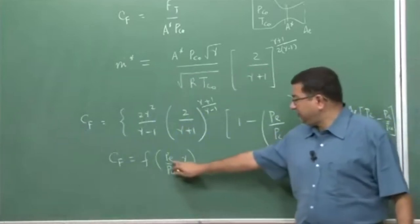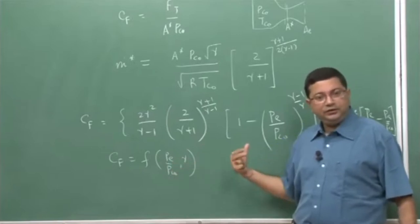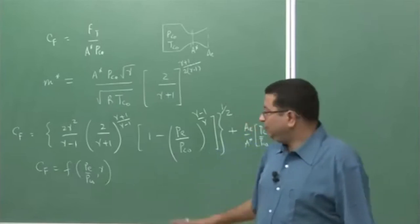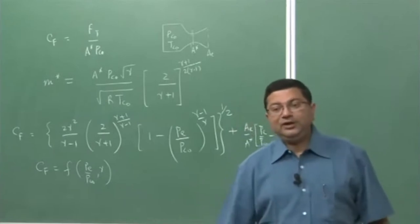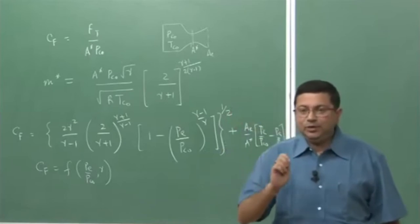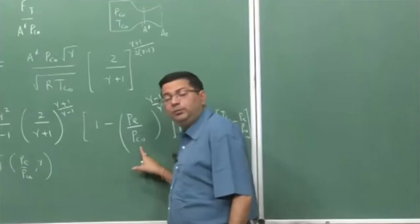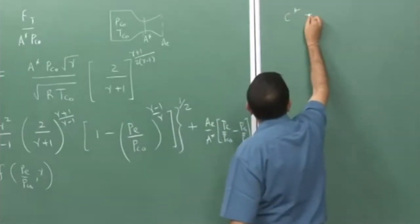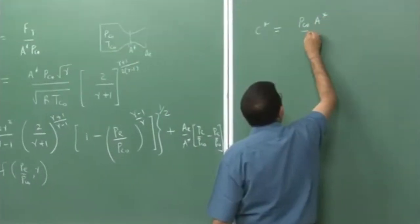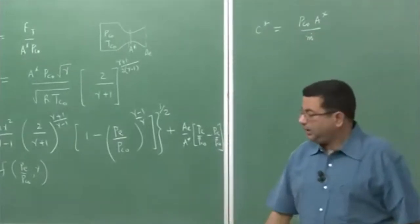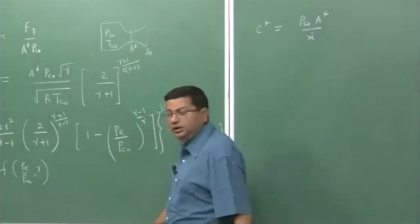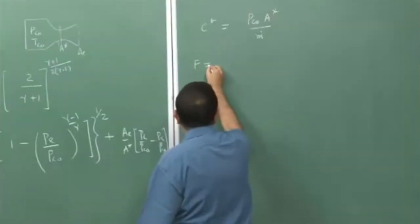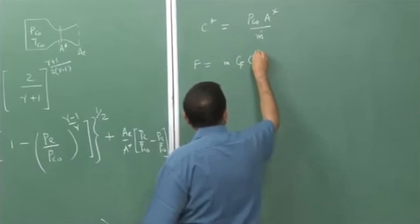Once the design is fixed, p_e is fixed and p_e/p_c0 becomes a fixed ratio. As we increase the pressure, the thrust coefficient increases, but there is a maximum limit — when the exit pressure is very small compared to stagnation pressure we reach the ultimate thrust coefficient. We also defined the characteristic velocity c* as p_c0 times A* divided by m-dot. The thrust coefficient dictates the nozzle performance, while the characteristic velocity dictates combustion chamber performance.